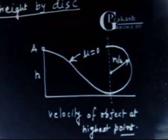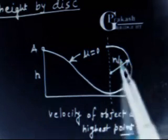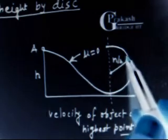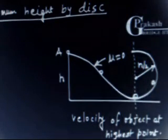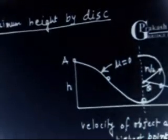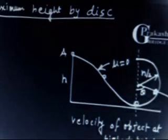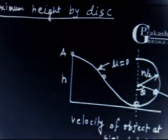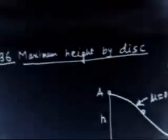The object can lose contact with the groove somewhere on the circular part. Let us say it loses contact at some angle theta. The condition to lose contact is that the normal reaction should be zero. I will write two equations: one from energy conservation and another from circular motion.